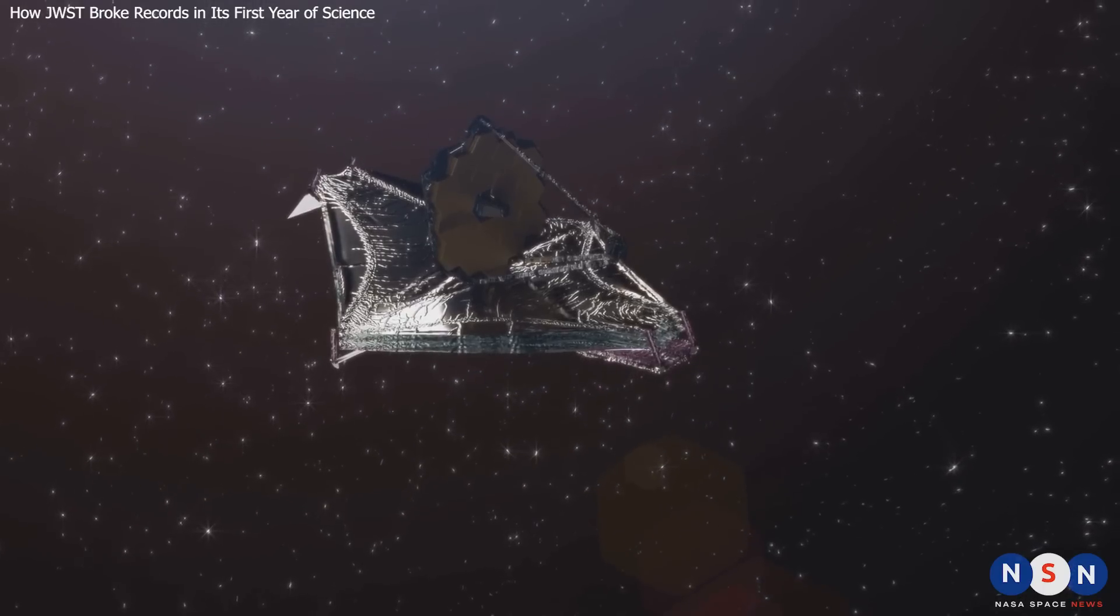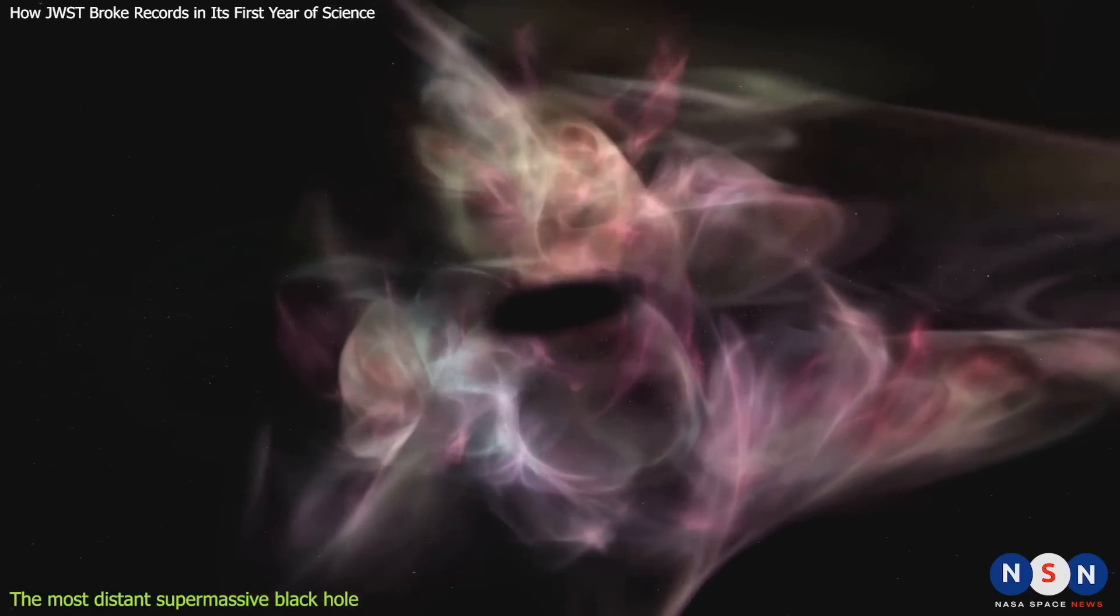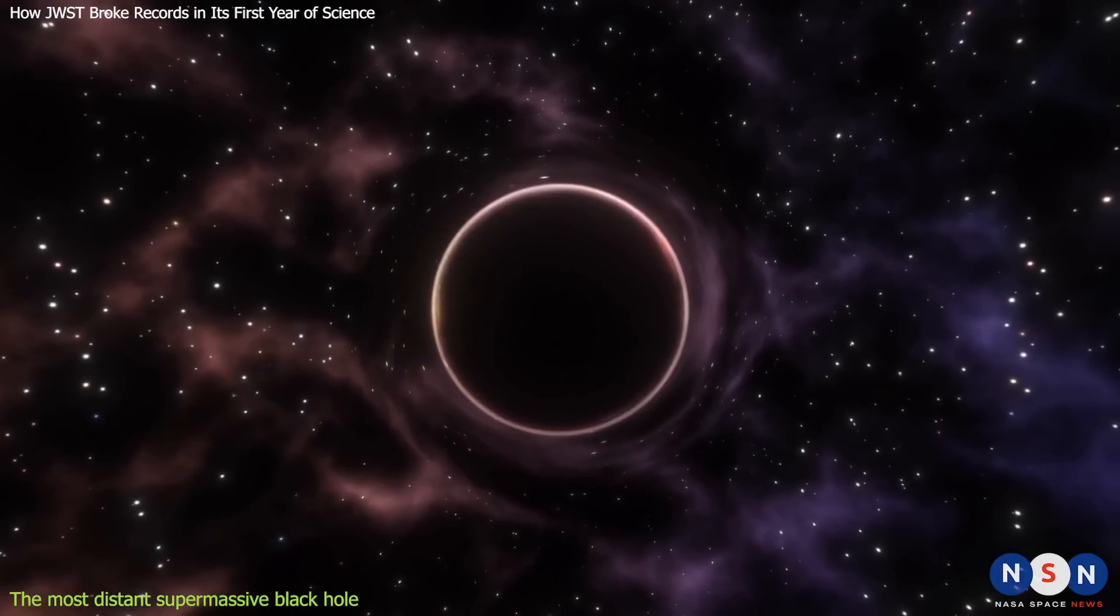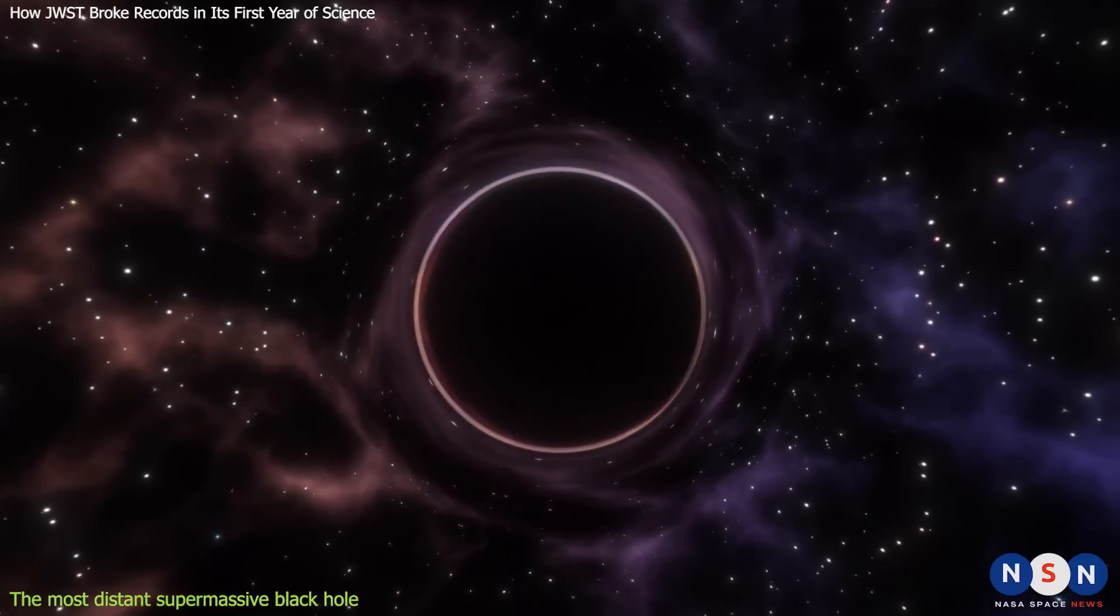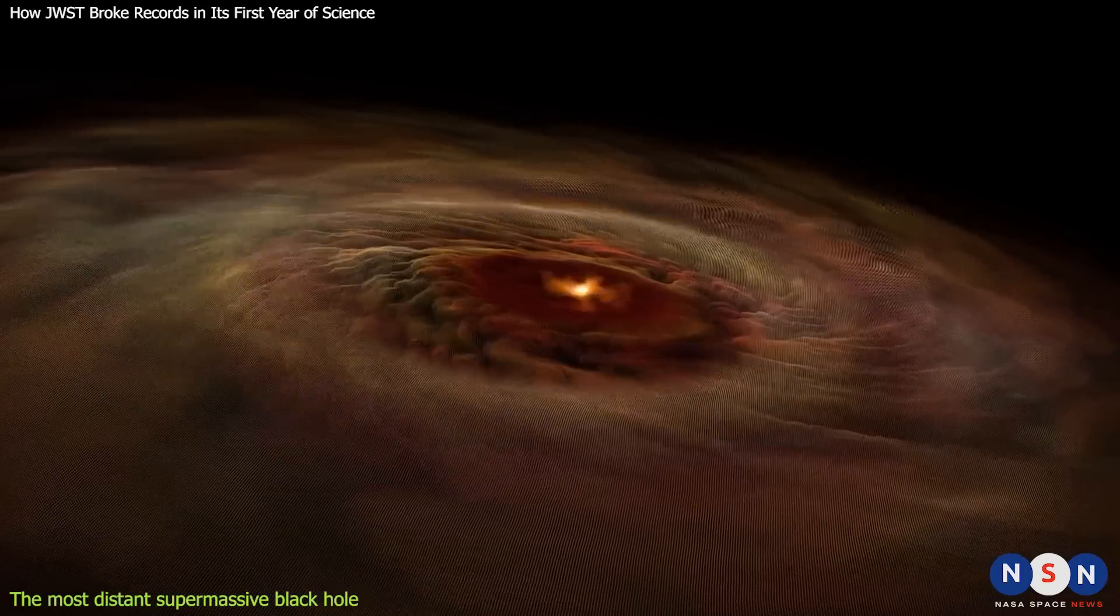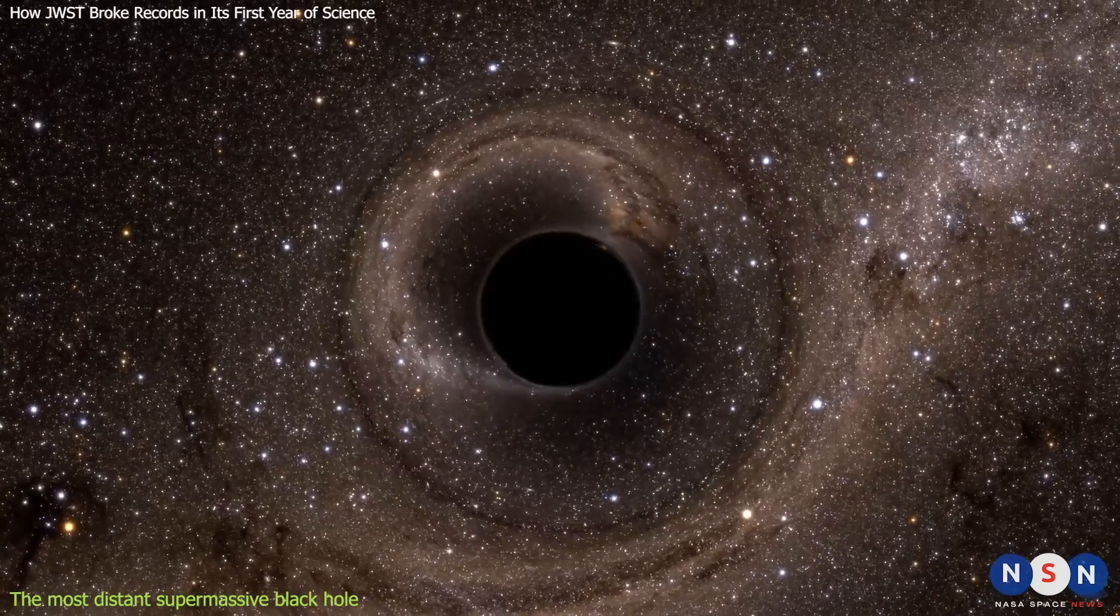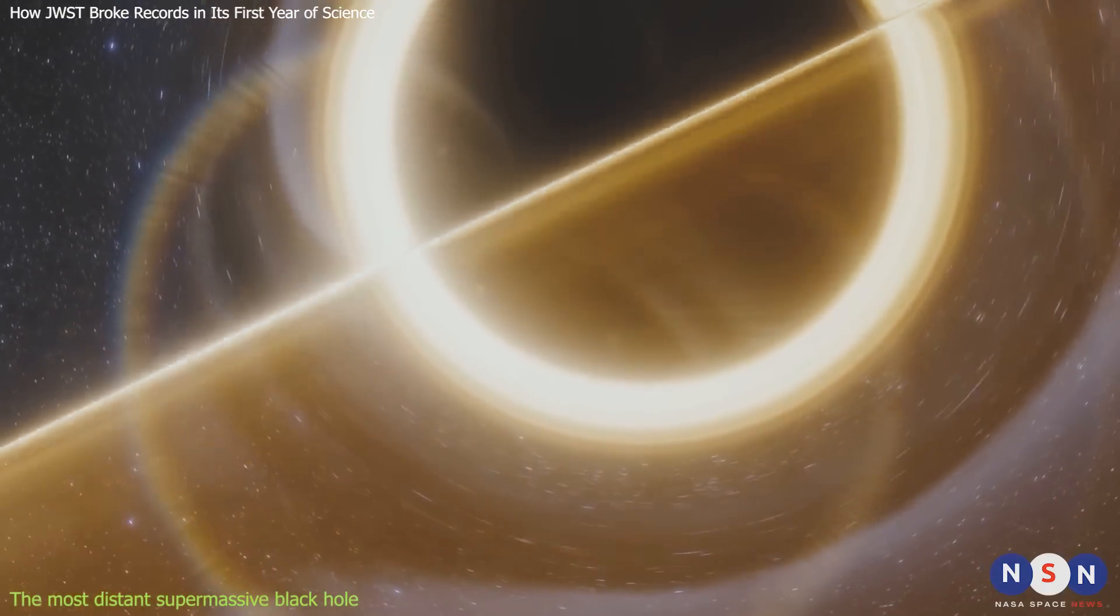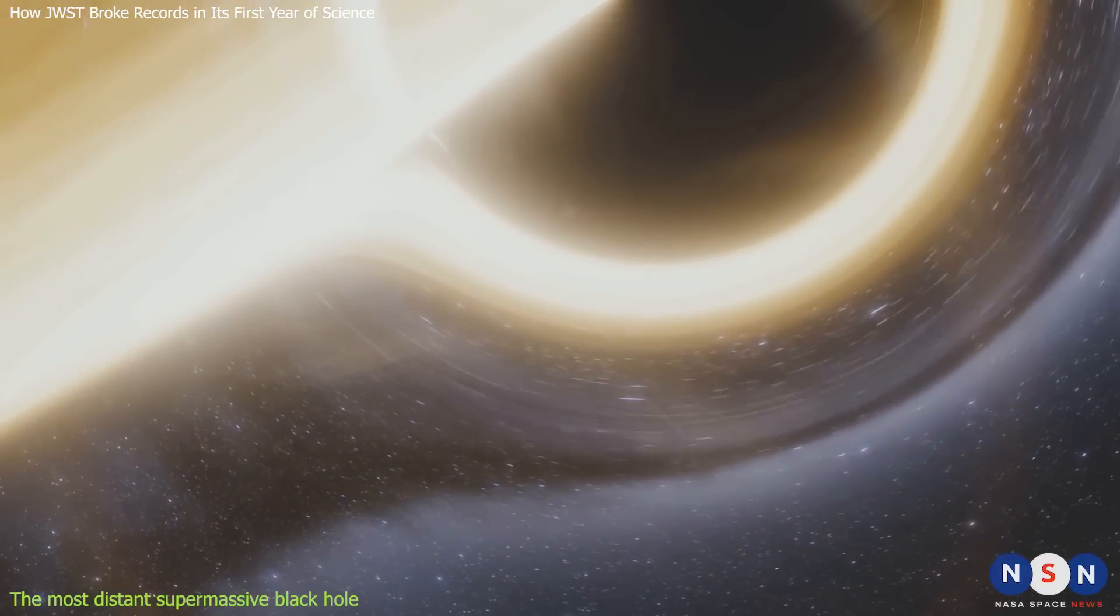One of the main goals of JWST is to study the formation and evolution of the first black holes in the universe. Black holes are regions of space where gravity is so strong that nothing can escape, not even light. They can form from the collapse of massive stars or from the merger of smaller black holes. Some black holes can grow to become supermassive, with masses millions or billions of times those of our sun.